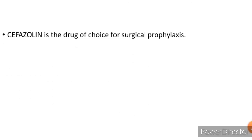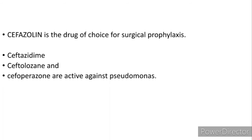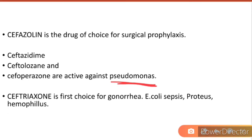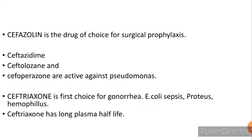Some important drugs from the cephalosporin group particularly asked about: Cefazolin is the drug of choice for surgical prophylaxis. Ceftazidime, ceftolozane, and cefoperazone are active against Pseudomonas — these three are anti-pseudomonal cephalosporins. Ceftriaxone is the first choice for gonorrhea, E. coli, Proteus, and Haemophilus infections. Ceftriaxone also has a long plasma half-life.